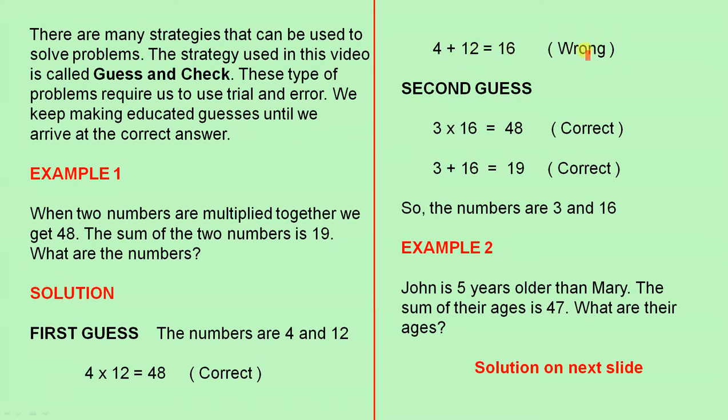Second guess, the first number is 3 and the second number is 16. If we multiply 3 by 16, that gives us 48. That is correct. If we add the two numbers together, 3 plus 16 gives us 19. That's also correct because it says the sum of the two numbers is 19. So the numbers are 3 and 16.